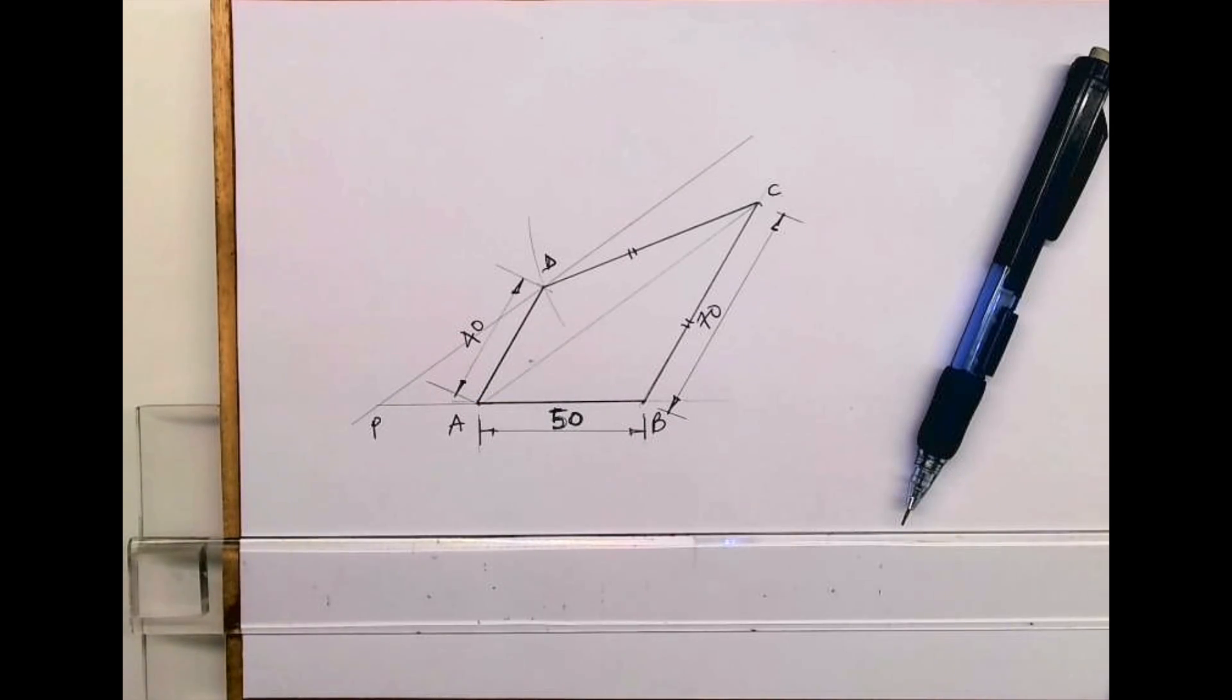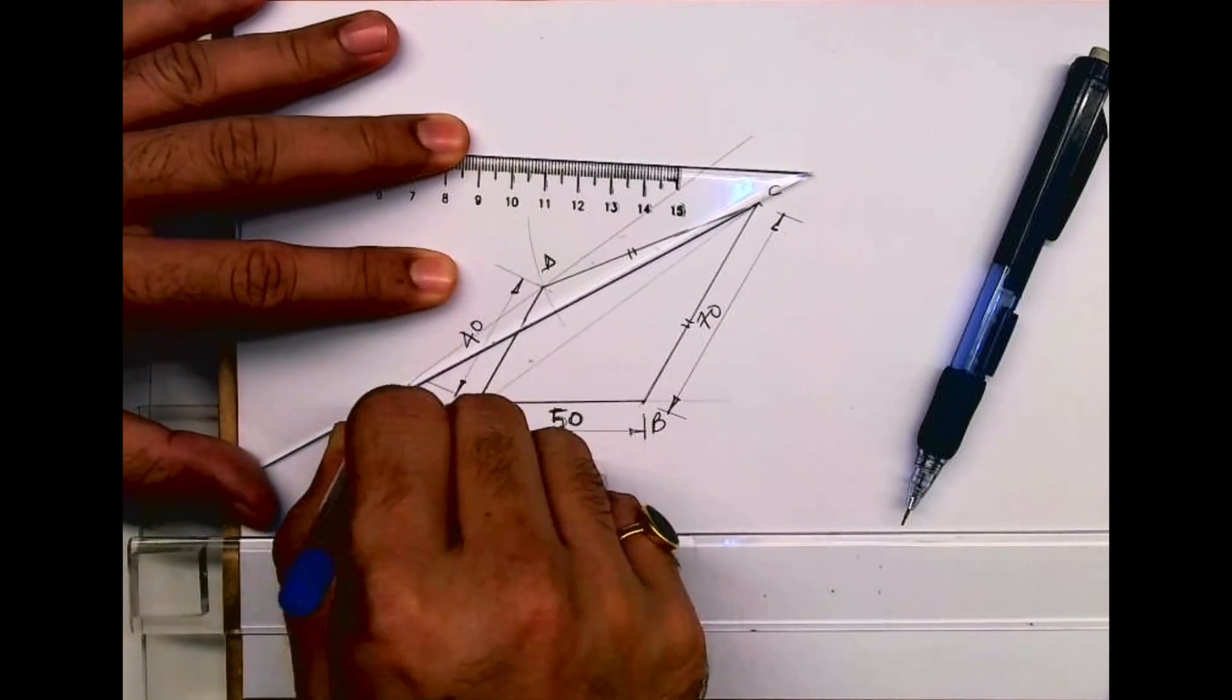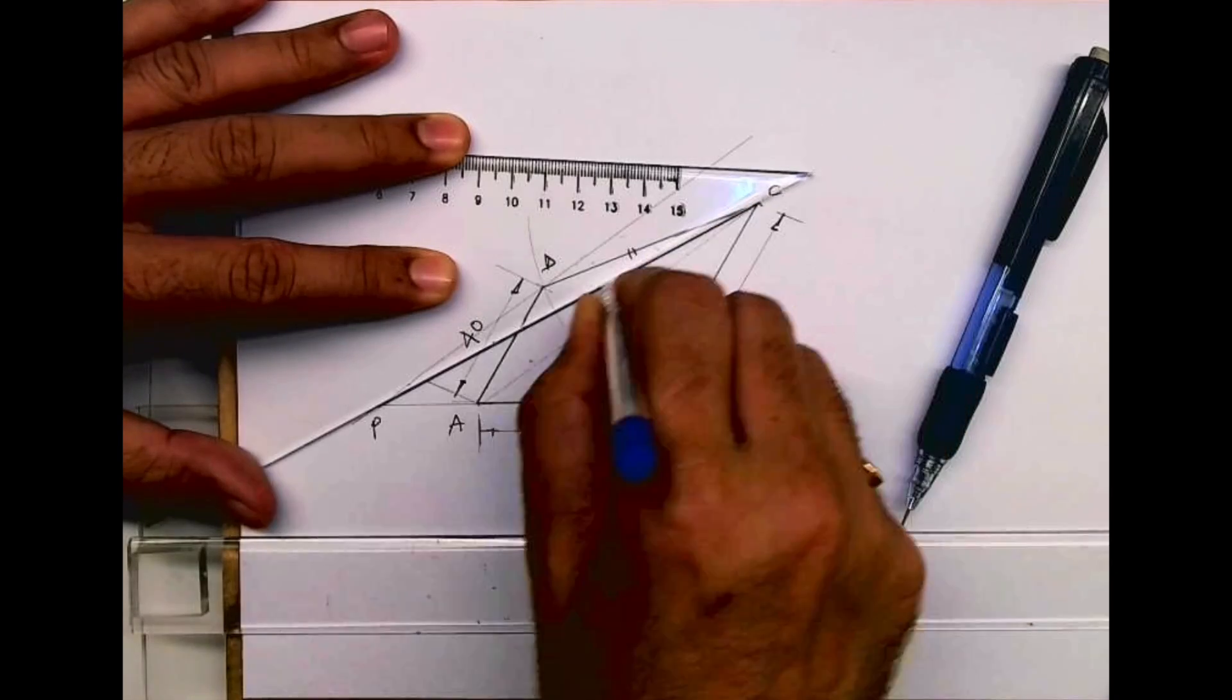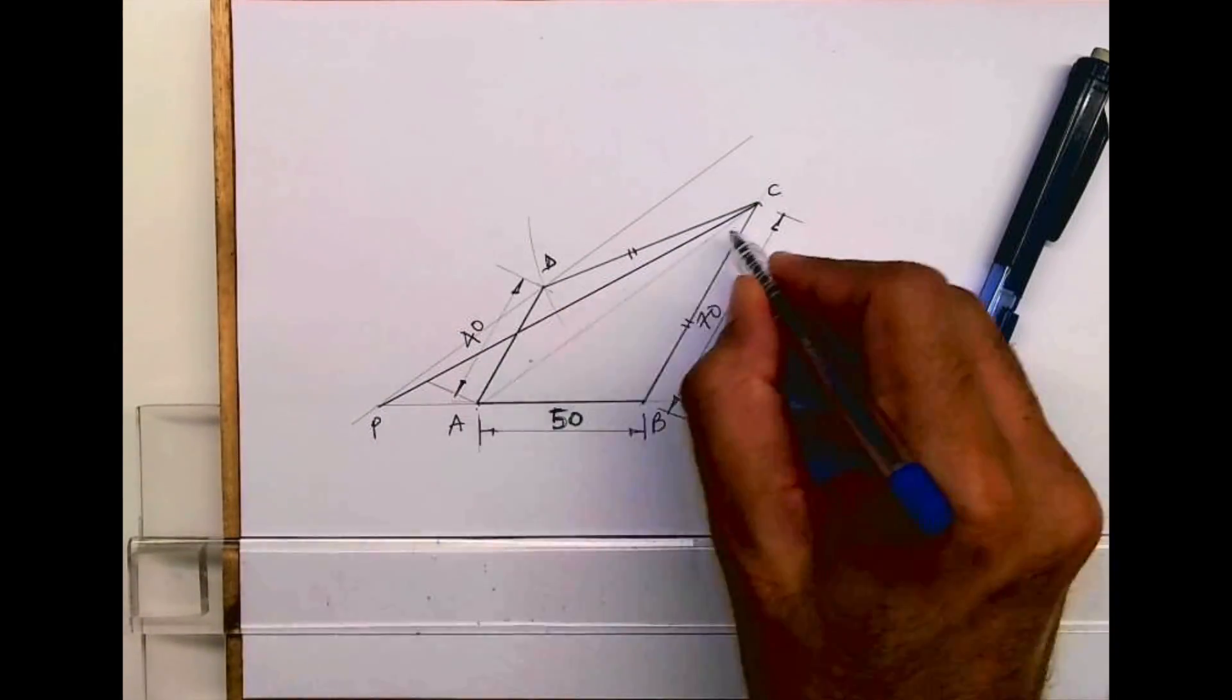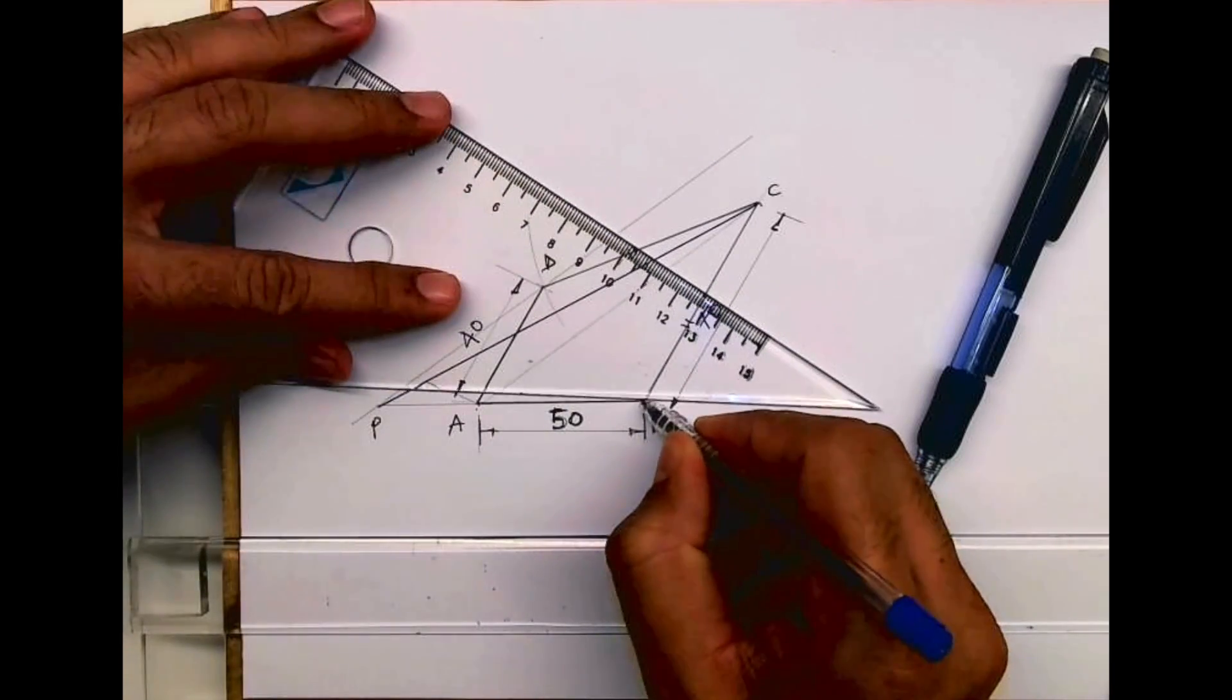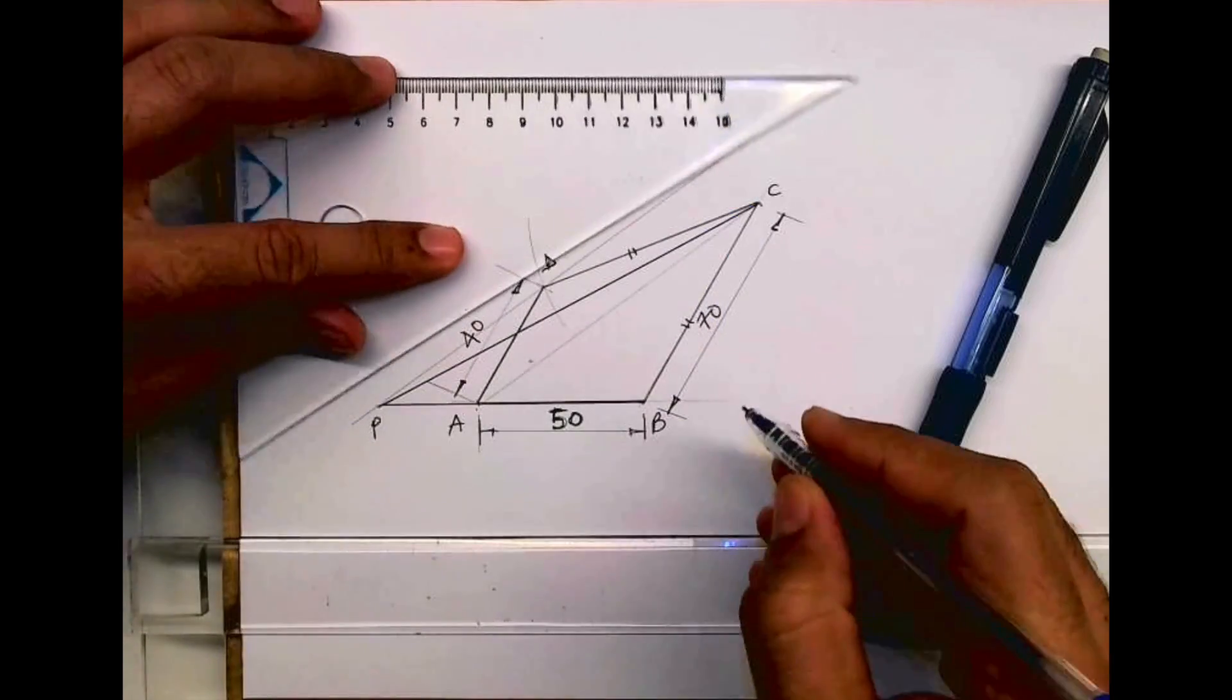We'll have triangle ACP. See this - instead of ACD we'll have ACP. So now we have a complete triangle.